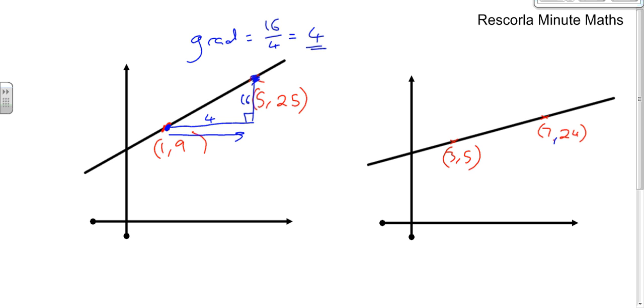Next, this one here, again we draw a right angle triangle. So this one has gone 3 across, this one's got 7 across. So it's gone across by 4. This point here is 5 up, this one here is 24 up. So if I've gone from 5 up and I keep going up until I get up to 24, that's a rise of 19.